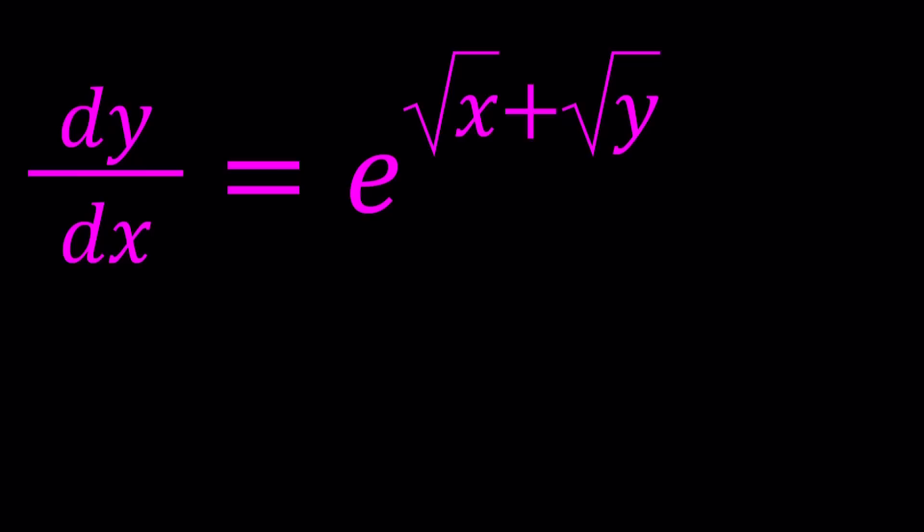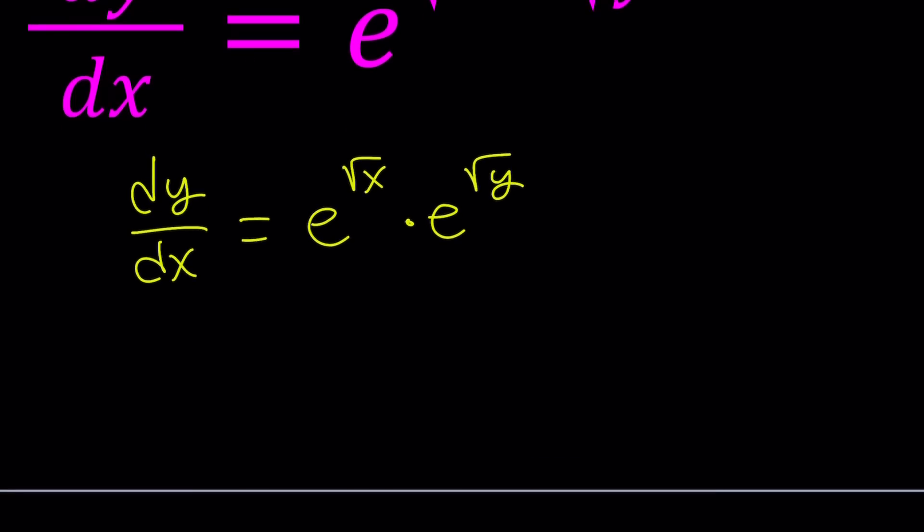So let's go ahead and write e to the square root of x plus square root of y as a product. Because this is a separable equation, we can go ahead and separate these two variables like this. And then by cross multiplication, we get dy equals e to the power square root of x times e to the power square root of y times dx.